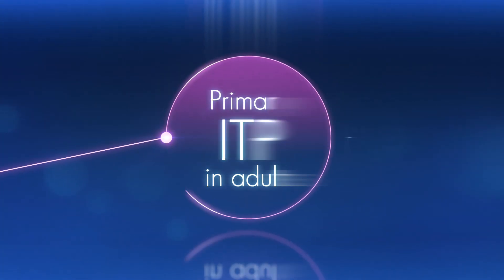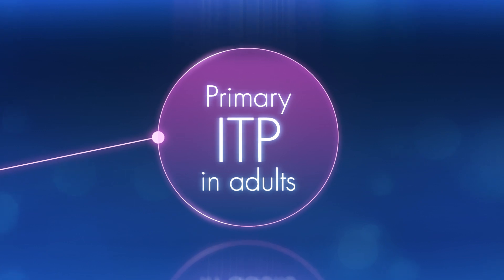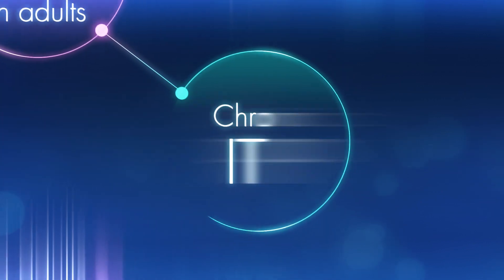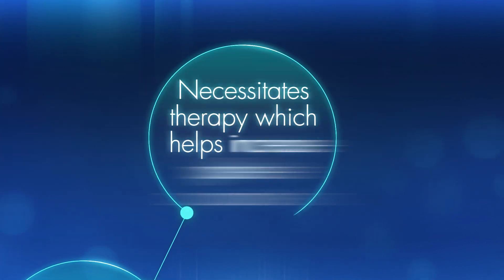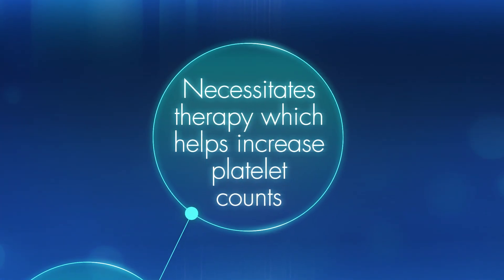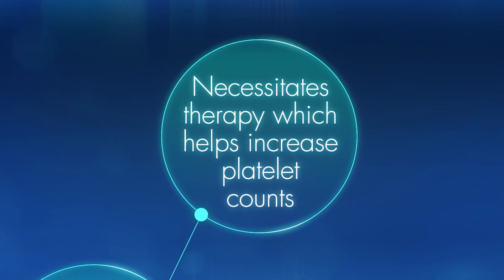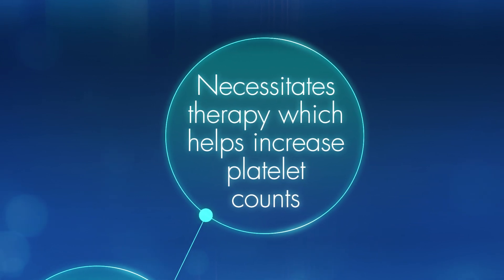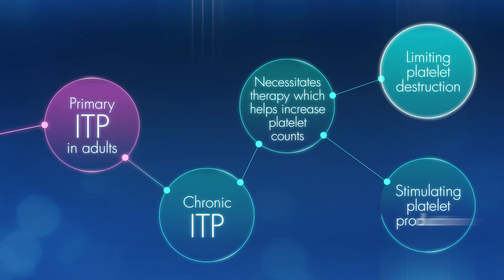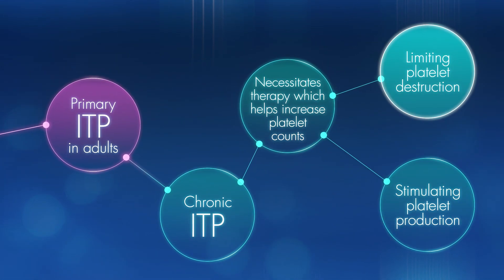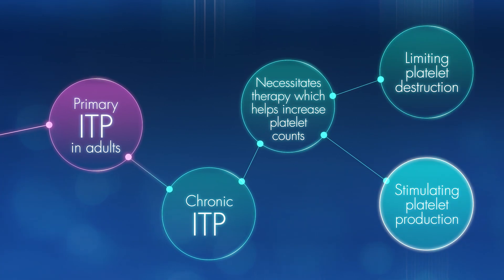Primary ITP in adults usually progresses towards chronic disease that necessitates therapy which helps increase platelet counts to a durable level via strategies such as reducing platelet destruction and increasing platelet counts.